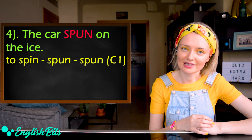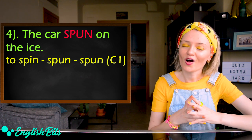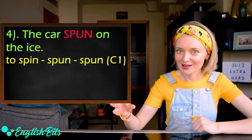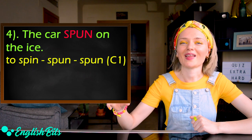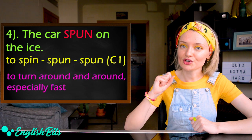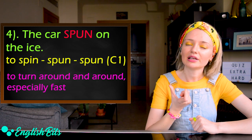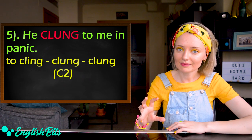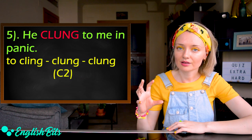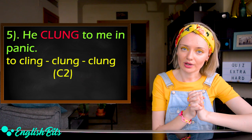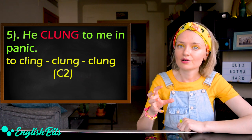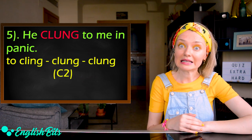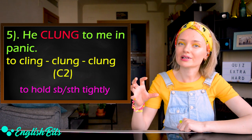Number four: The car spun on the ice. The verb is to spin, spun, spun. It's level C1 and it means to turn around and around, especially fast. Was it correct? Number five: He clung to me in panic. The verb is to cling, clung, clung. It's level C2 and it means to hold somebody or something tightly.